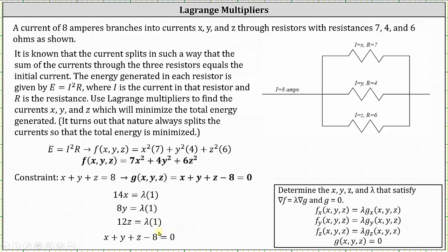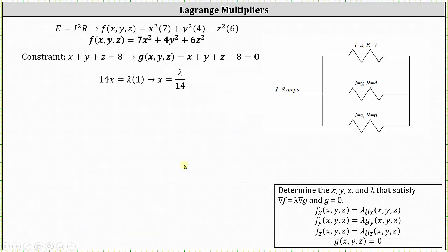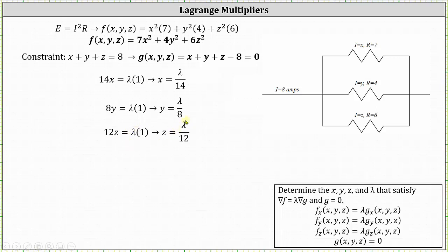Now we need to solve this as a system of equations. We solve the first equation for x, the second for y, the third for z, then substitute into the fourth equation. Dividing the first equation by 14 gives x equals lambda divided by 14. Dividing the second equation by 8 gives y equals lambda divided by 8. Dividing the third equation by 12 gives z equals lambda divided by 12.